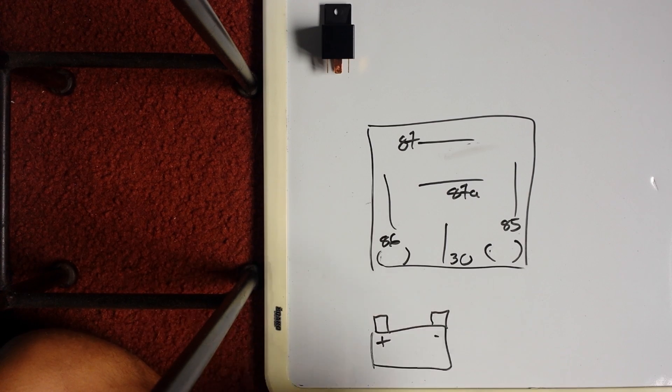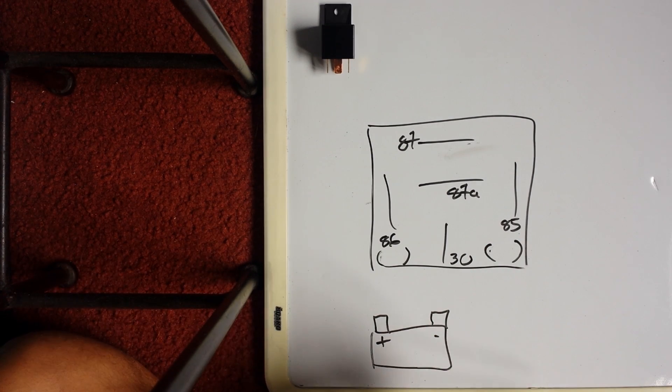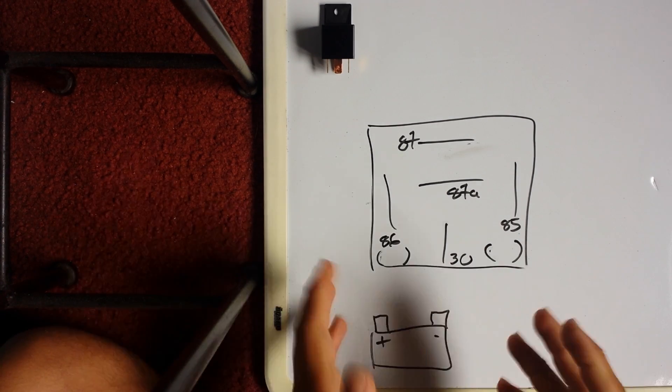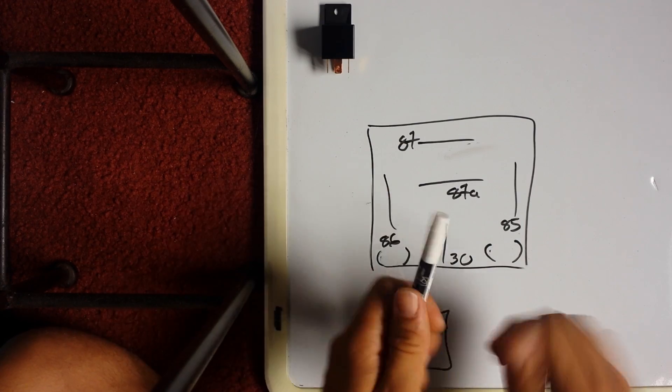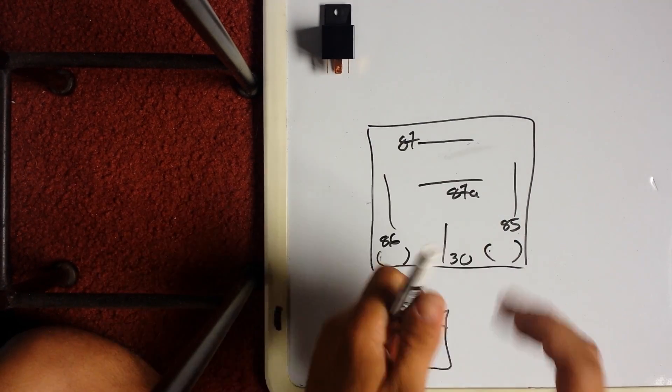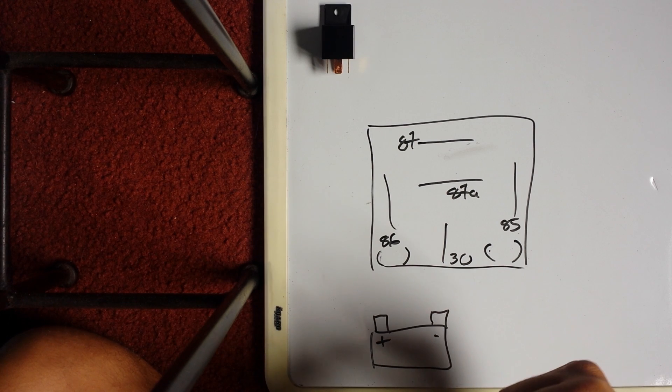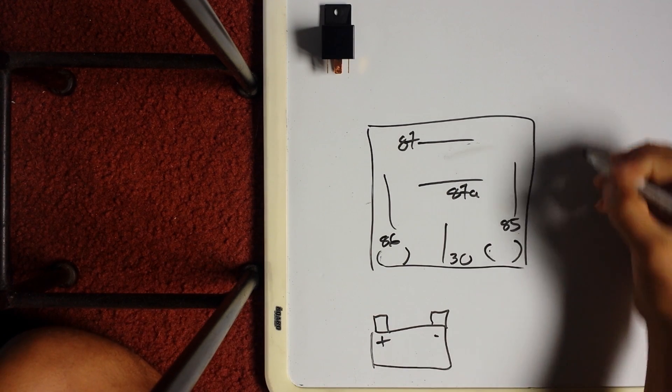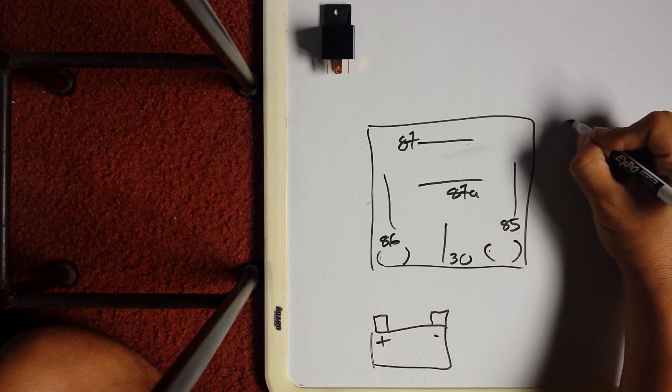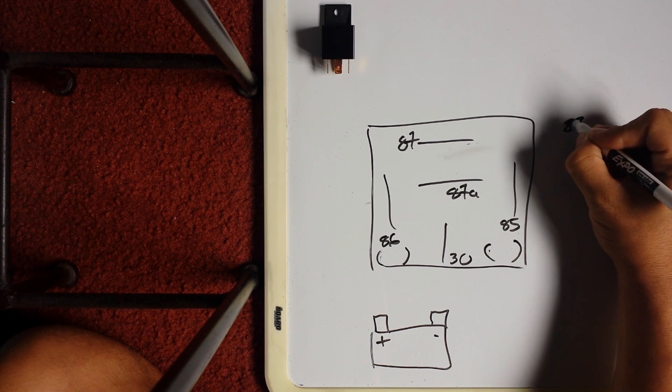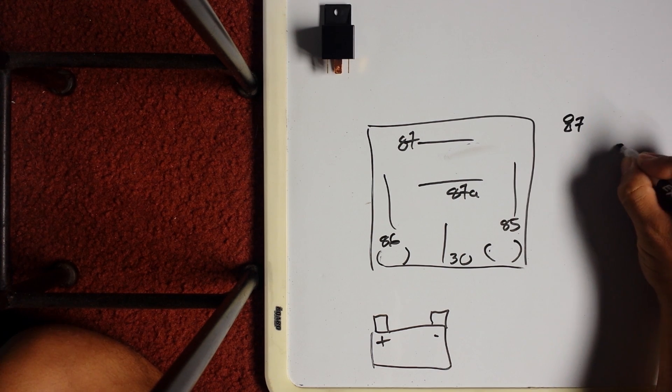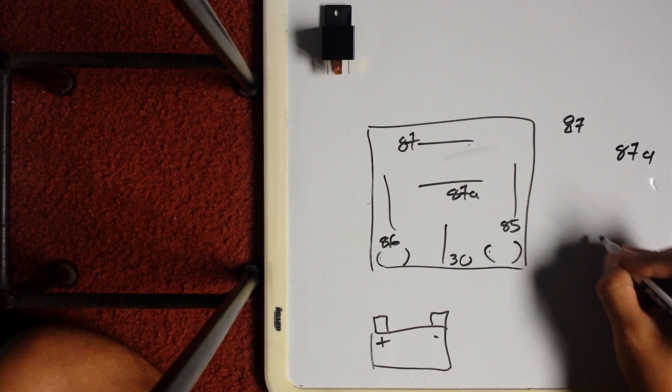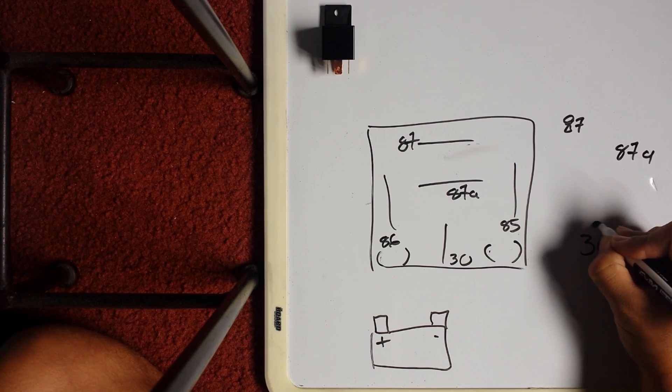Don't overthink it, it is what it is. You can get more into depth later on—crack one open, see how it works—but I'm just trying to explain it in a way everybody can understand. So internally you got 87 here, 87a here, and 30 here.